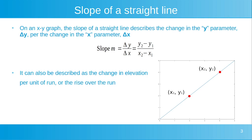If on our straight line we have two points with values x1, y1, and the second point with values x2, y2, then we can calculate our slope as y2 minus y1, all over x2 minus x1. So our slope can also be described as the change in elevation per unit of run, or we can describe it as the rise over the run.